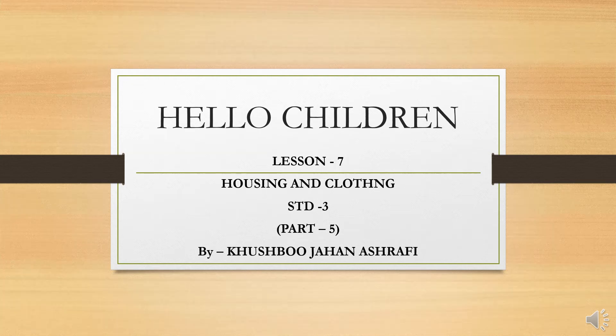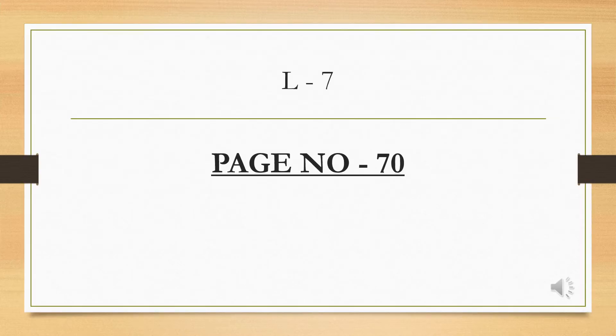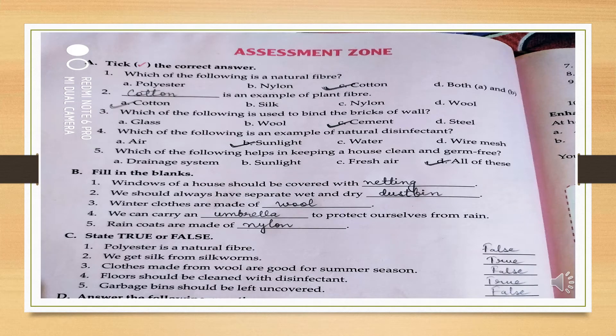Hello children, this is lesson 7 - Housing and Clothing, Part 5. Last class I gave you some homework in this chapter. So let's solve that assessment zone exercise. If you have done it, recheck your answers. Check out page number 70 of your textbook - Assessment Zone. The first question is: tick the correct answer. Questions are given along with four options; you have to choose and tick the correct answer.